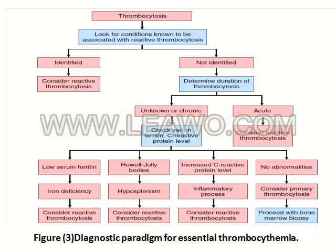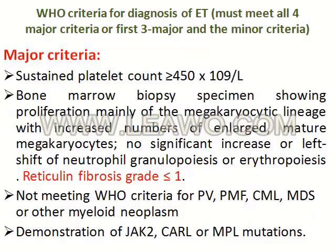This paradigm shows the diagnostic approach to thrombocytosis. First look for conditions associated with reactive thrombocytosis. If found, it is reactive thrombocytosis. If not, determine the duration. If acute, consider reactive thrombocytosis. If the duration is unknown or chronic, check serum ferritin and C-reactive protein, or perform a blood smear. Low serum ferritin suggests iron deficiency anemia. Howell-Jolly bodies on smear suggest post-splenectomy or hyposplenism. Increased CRP suggests an inflammatory process. If no abnormality is found, consider primary thrombocytosis and proceed to bone marrow.